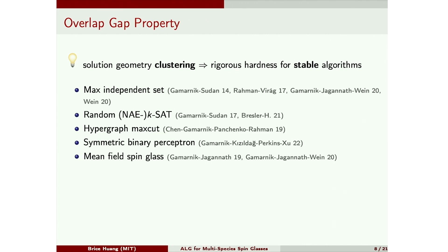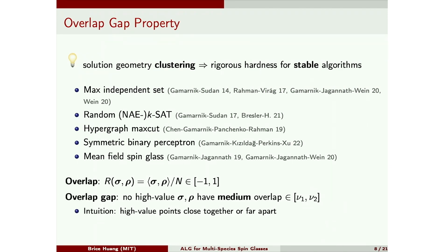The proof of hardness goes through the overlap gap property. This is a framework introduced by Gamarnik and Sudan, which turns clustering properties of the solution space to rigorous hardness for algorithms that are suitably stable in the input. This has been used to show hardness in a lot of random optimization problems by many people in this room. And this framework formalizes clustering as an overlap gap. So the overlap of two states is their normalized inner product. And the overlap gap is the condition that any two sufficiently high-value states cannot have a medium overlap. So in other words, any two such states either have big overlap, which means they're close together, or small overlap, which means they're far apart.